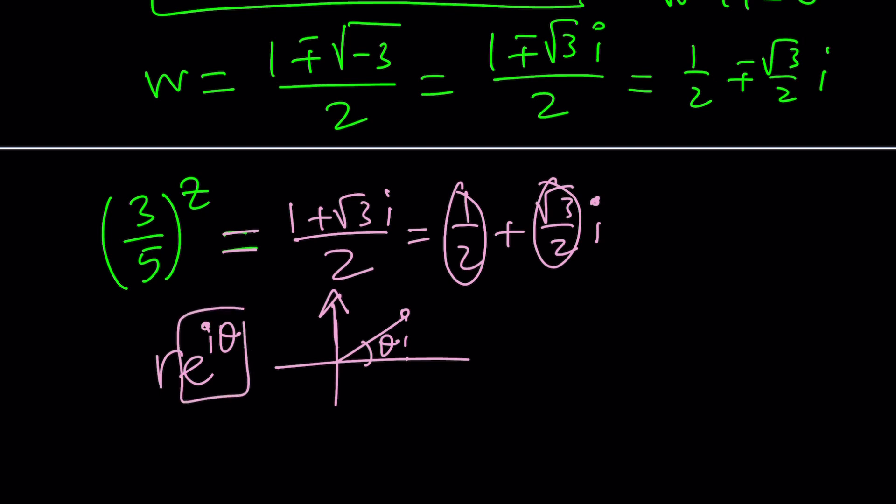So we're only going to need to worry about the e to the i theta. And theta happens to be, if you particularly try to graph this, because 1 half is less than root 3 over 2, it's going to look like something like this. And you're going to get 60 degrees, or you could probably use radians here, which is better, pi over 3.